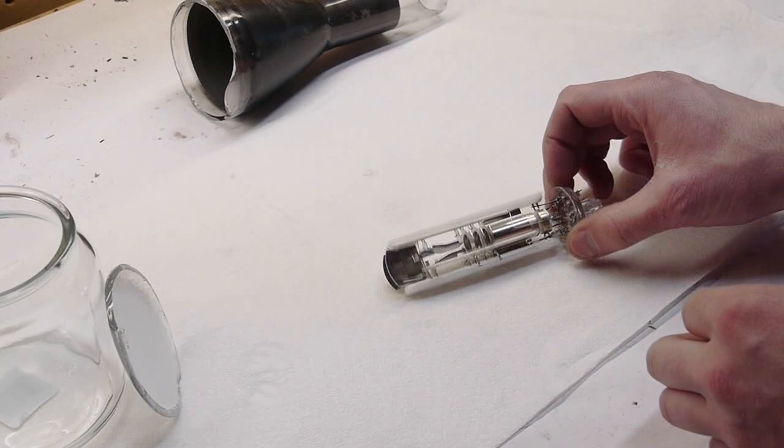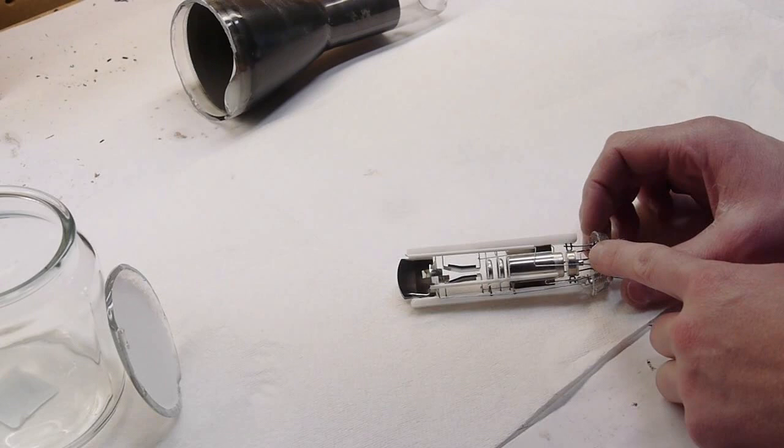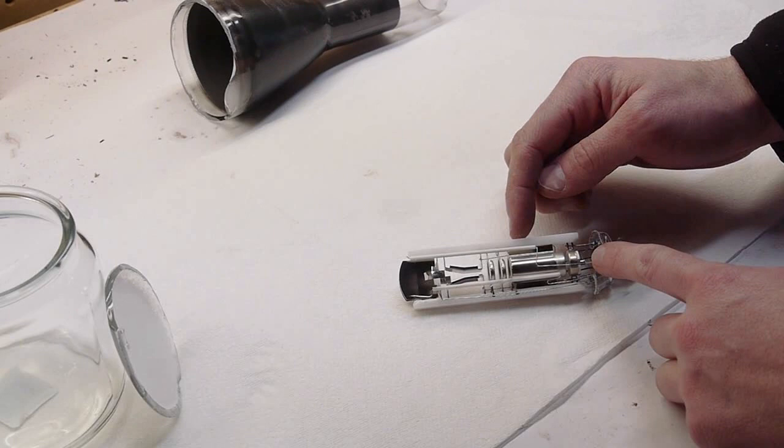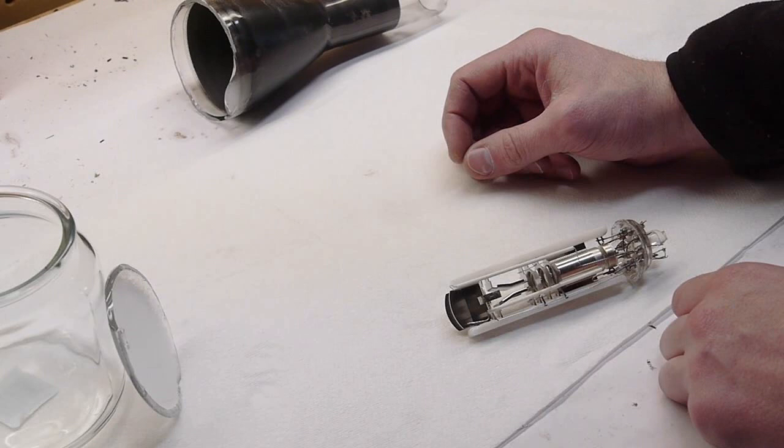So the way the cathode ray tubes work is by accelerating electrons and slamming them into a fluorescent screen. So in this case, the electrons start out over here at the beginning of the electron gun, and are focused, accelerated, and deflected by this whole assembly here, and make their way all the way out to the front where they hit the screen, and the fluorescent phosphor there produces a spot of light where the electrons are striking.